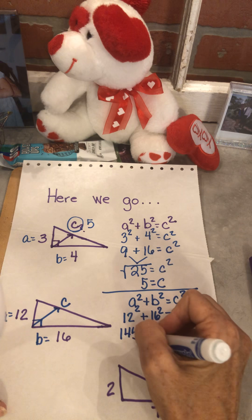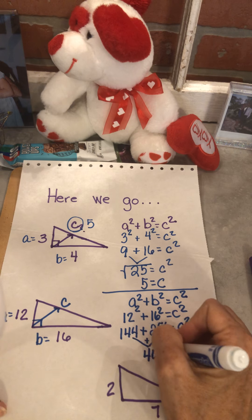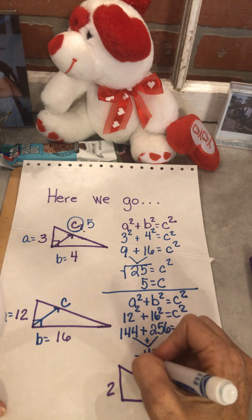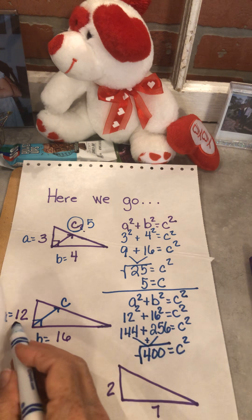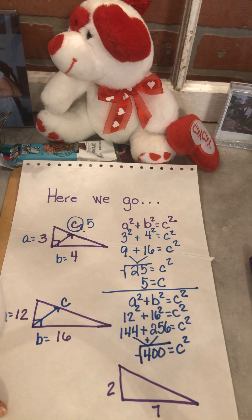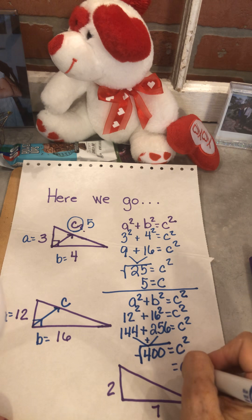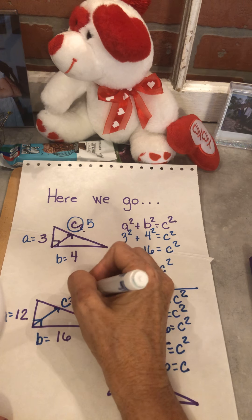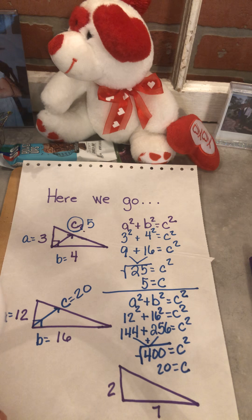When I add those up, I get 400. Now I need the square root because I need this before it squared, I need this before it squared. So I got to get the square root, and I'm thinking to myself, what times what gives me 400? And the answer is 20. So I come over here and I say c is 20. And is that true? Is that my biggest measurement? Yes.